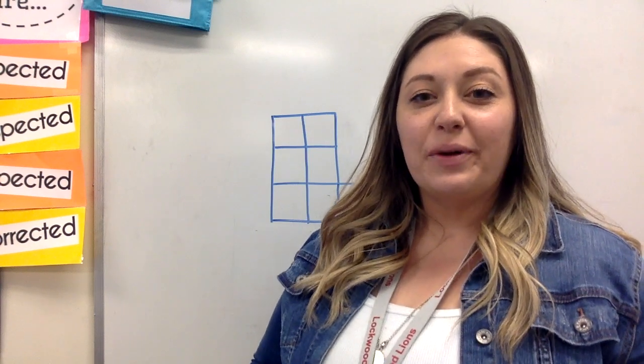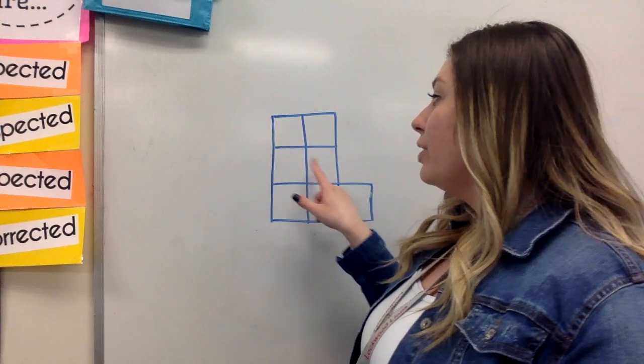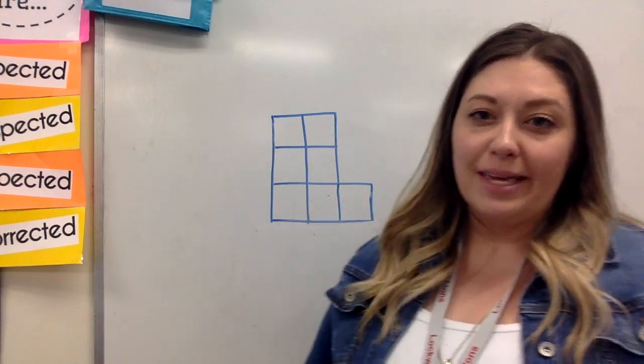Hey everyone! Today we're going to find a perimeter around a shape that has square units inside of it instead of being given the side lengths.